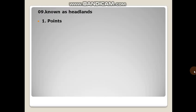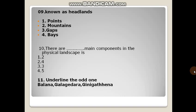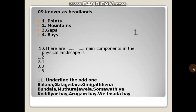Points are known as headlands. There are four main components in the physical landscape: relief, drainage, climate, and natural vegetation. Balane, Galakitre, and Ginigathena are gaps.